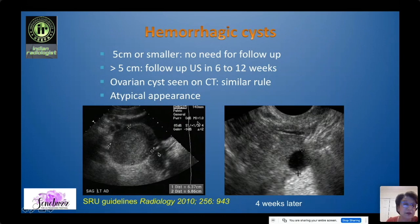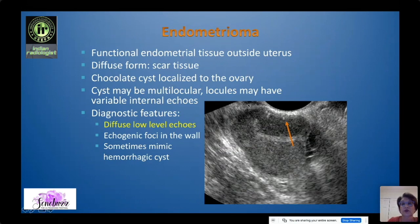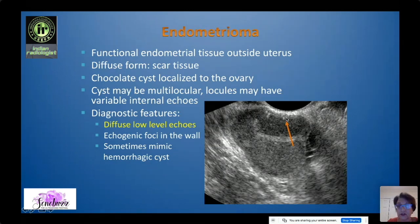If a hemorrhagic cyst has an atypical appearance — looking more solid — then you do get follow-up, and resolution will confirm it was hemorrhagic. Another lesion we can diagnose with confidence is the endometrioma, which is functional endometrial tissue outside the uterus. The chocolate cyst is localized endometriosis of the ovary. They have a very typical appearance: unilocular or multilocular with diffuse ground-glass low-level echoes. Look also for echogenic foci in the wall, which are very characteristic of endometriomas, likely from hemosiderin from the hemorrhage.